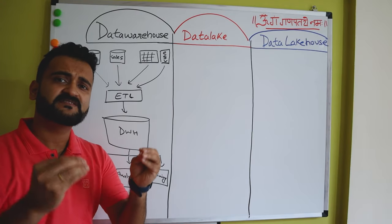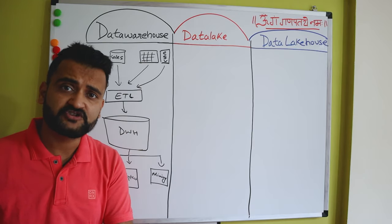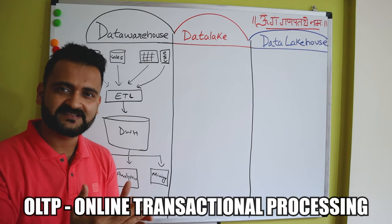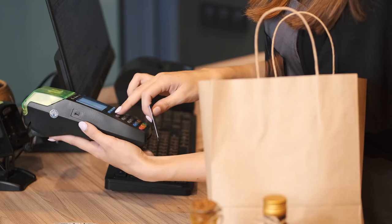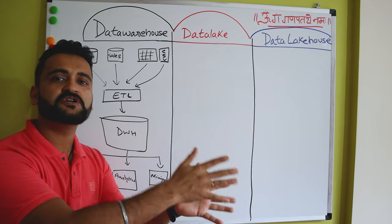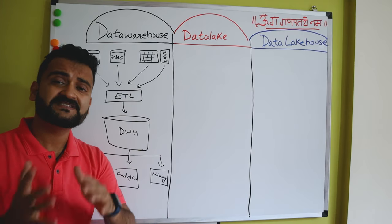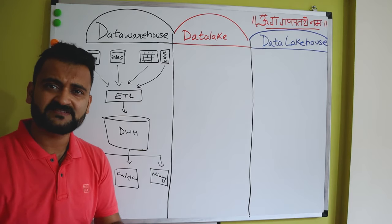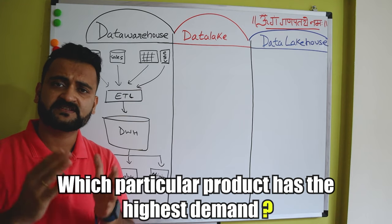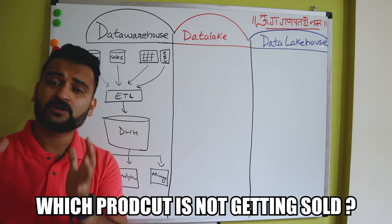Data warehouse as a concept has been around since the 1980s. Once we had our databases maturing — which are traditionally OLTP systems, online transactional processing systems — suppose if you go to a vendor and do the billing, all that transactional data used to go into your OLTP systems. But with these OLTP systems, there was a problem: business was not able to gain business insights. For example, which particular product has the highest demand as far as sales is concerned? What is the buying behavior of the customer? Which product is not getting sold at all?